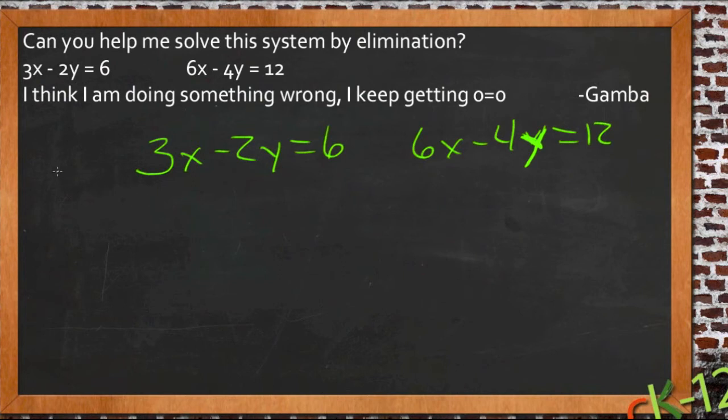So if we multiply everything here by negative 2, negative 2 times this whole equation, we get negative 2 times 3x, and we get negative 6x. Negative 2 times negative 2y gives us positive 4y. And then negative 2 times 6 gives us negative 12.